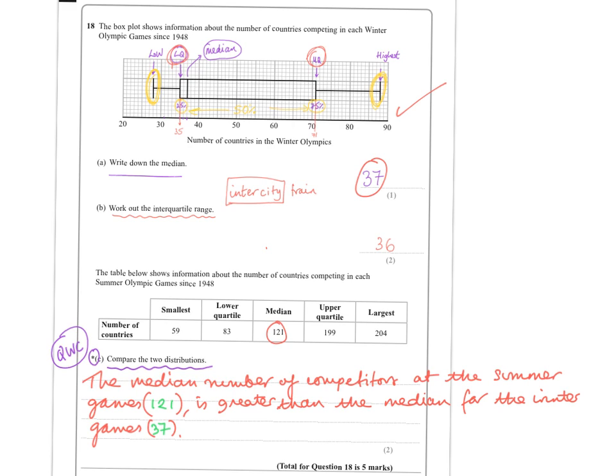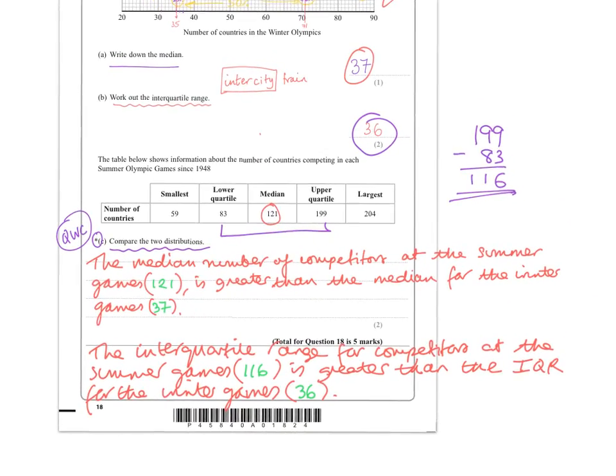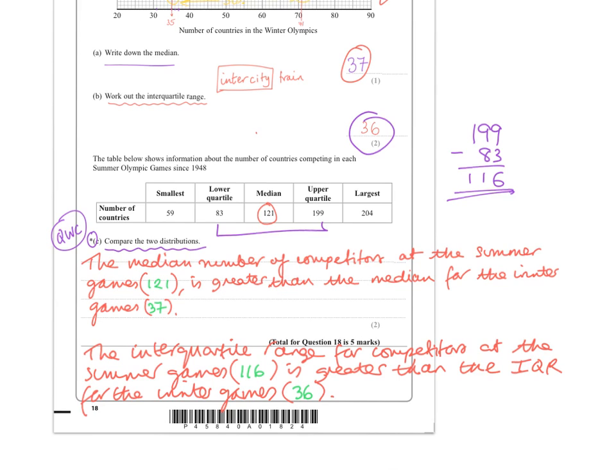So let's look at the second part now. So we're going to compare the interquartile range for each set of data. So we're going to firstly look at the interquartile range for the winter games. We've got 36. And if you want to look at the interquartile range for the summer games, we've just got to do 199 minus 83, which is 116, whether you use your calculator or not. So I'm now ready to write my sentence. So I've written the interquartile range for competitors at the summer games, 116, is greater than the, and I put IQR, short for interquartile range for the winter games, 36. So I've compared the medians and what is known as the spread of the data as well. So the spread being the interquartile range.